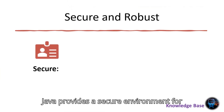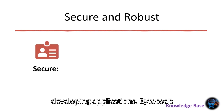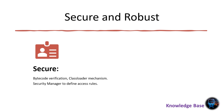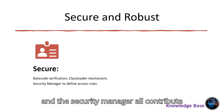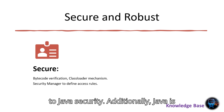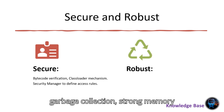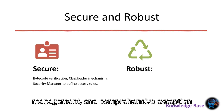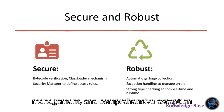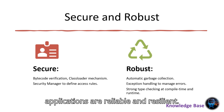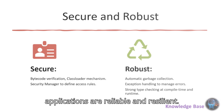Java provides a secure environment for developing applications. Bytecode verification, the class loader mechanism, and the security manager all contribute to Java security. Additionally, Java is robust, with features like automatic garbage collection, strong memory management, and comprehensive exception handling. This ensures that Java applications are reliable and resilient.